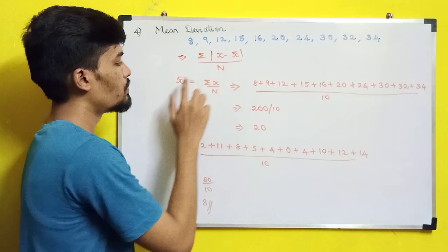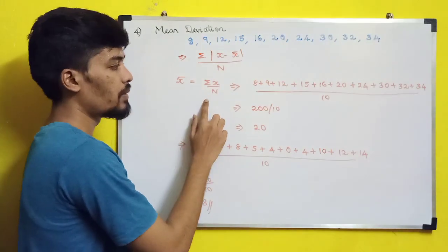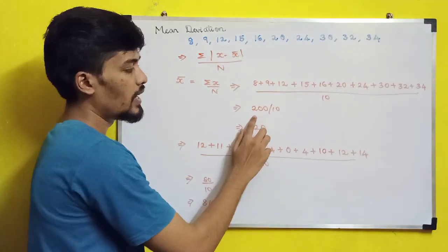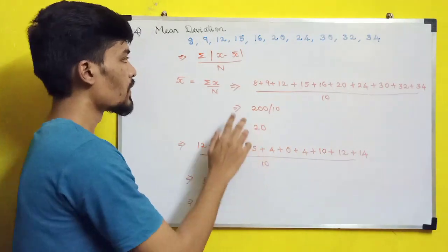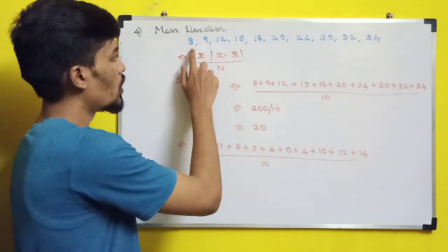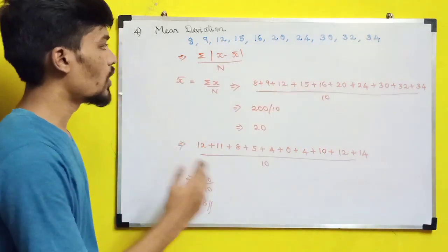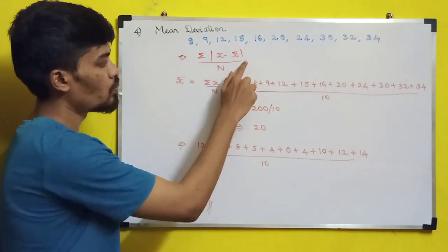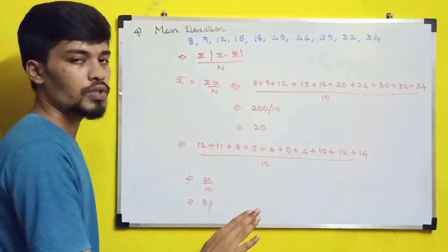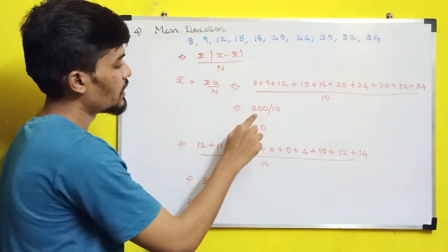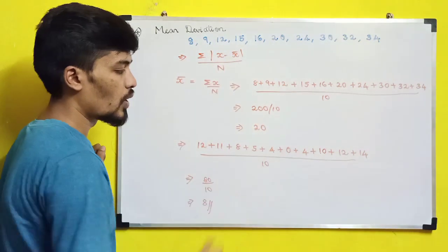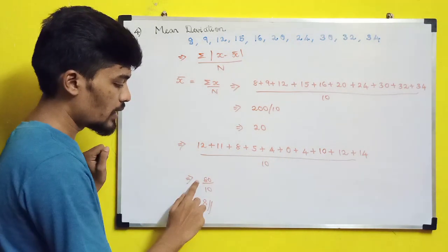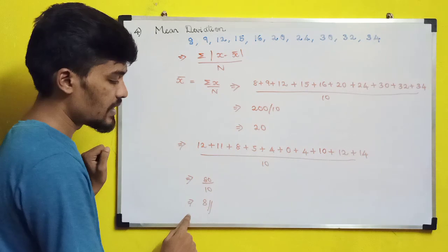First find x̄: add all values and divide by 10. The sum is 200, so x̄ = 20. Then compute |x − 20| for each value: |8 − 20| = 12, |9 − 20| = 11, and so on for all ten values. Since we use modulus, all deviations are positive. Adding all the deviations gives 80. So mean deviation = 80 / 10 = 8.